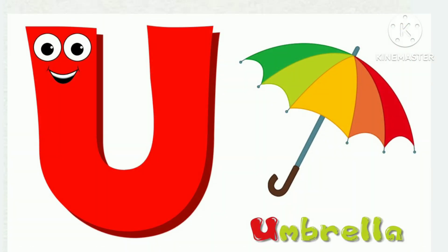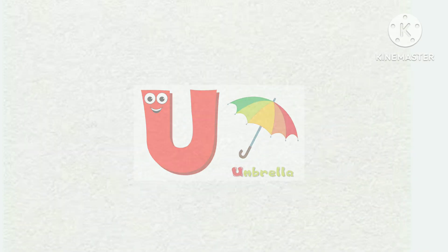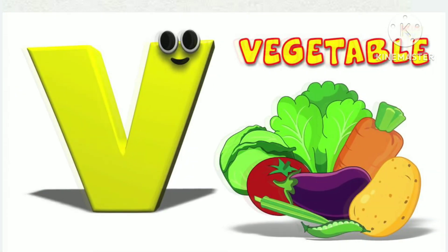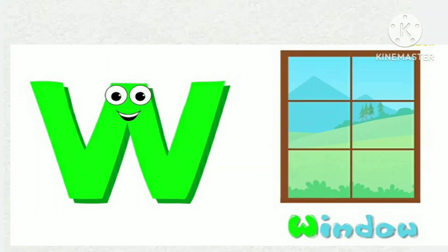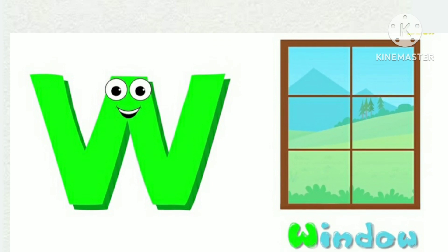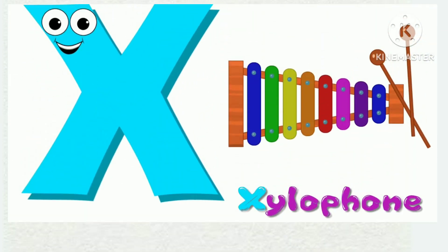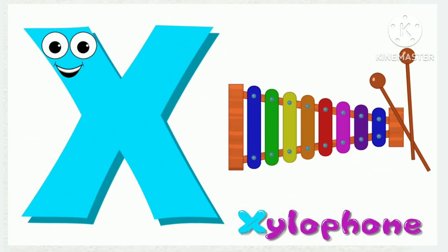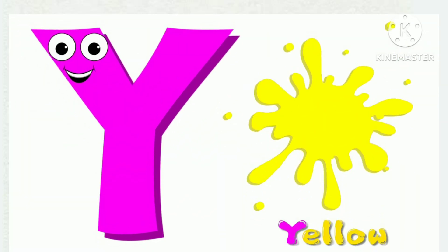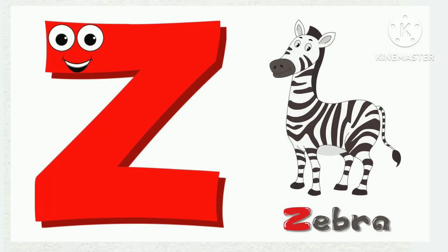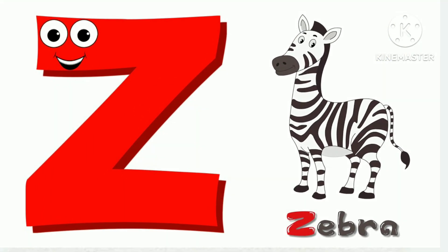T for Tiger, U for Umbrella, B for Vegetable, W for Window, X for Axelophon, Y for Yellow, Z for Zebra.